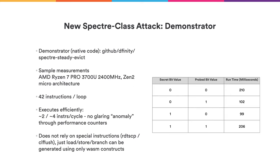A demonstrator on a target system — in this case an AMD Ryzen class CPU — yields that we actually achieve a slowdown by a factor of two between the slow and fast measurements. So we can execute the loop such that it takes 200 milliseconds in one case or 100 milliseconds in the other. This is a very measurable signal even across the network, and can be amplified further into the seconds range.